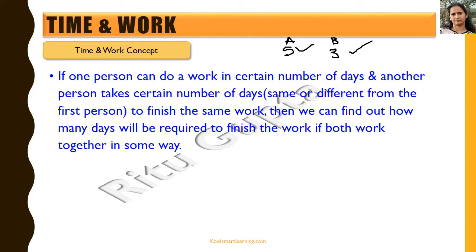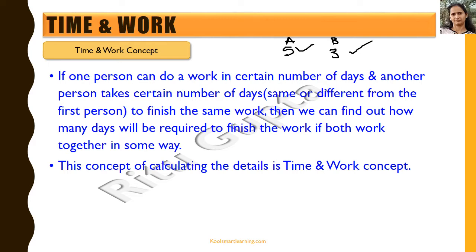There are different scenarios: A could work for only one or two days, and we can find out how many days B would need to finish the task. We could also have more than two people — say five people, each with their own efficiency. We can also use this concept to find out how many more resources are required to finish the task earlier than currently possible.